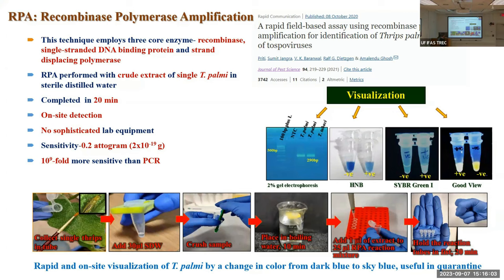The DNA extraction was simple: thrips were collected in a tube, water was added, the sample was crushed, and then placed in boiling water, and this was used as a template. We standardized the reaction to be completed at 37 degrees Celsius, which is body temperature, so the reaction can be completed simply by holding the tube in one's hand. For visualization, to eliminate the need for gel electrophoresis, we tested fluorescence-based dyes — SYBR Green and another dye, GoodView. The presence of Thrips parvispinus can be detected by a strong fluorescence signal, with no fluorescence in the negative sample — but this requires UV light.